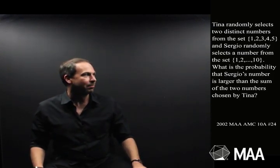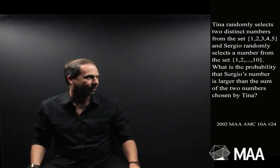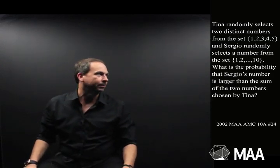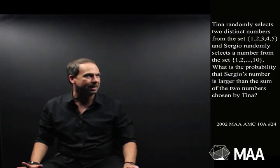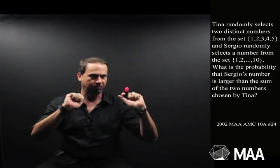Tina randomly selects two distinct numbers from the set 1, 2, 3, 4, 5, and Sergio randomly selects a number from the set 1, 2, 3, up to 10. So Tina selects two distinct numbers from that small set, Sergio one number from that big set. So far so good.